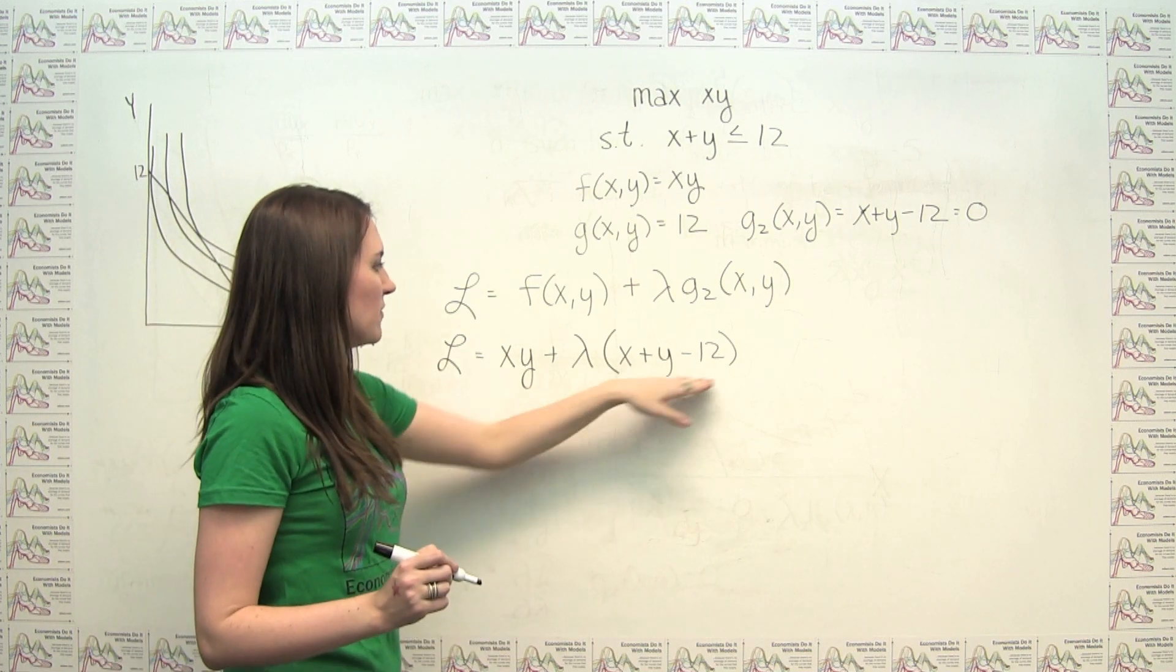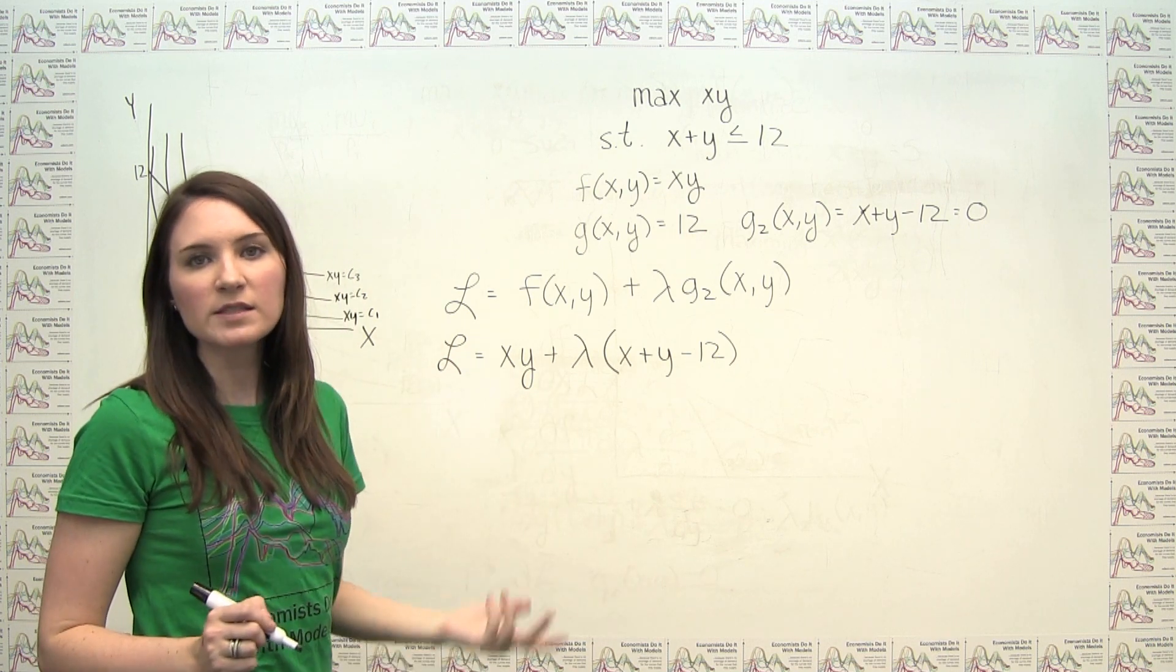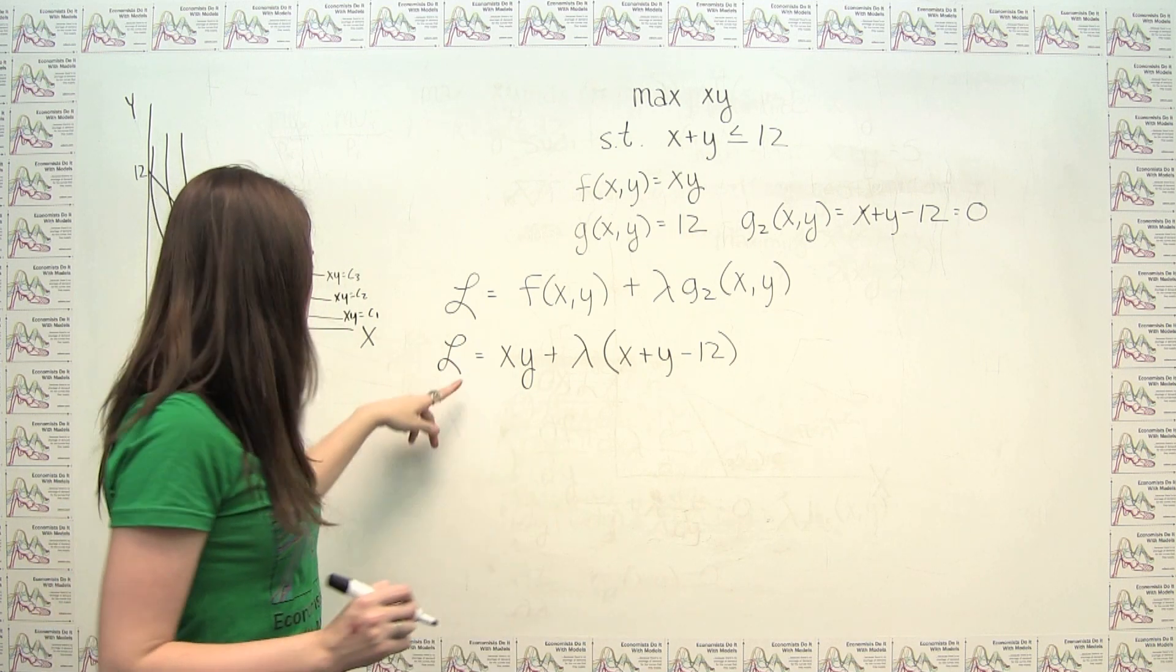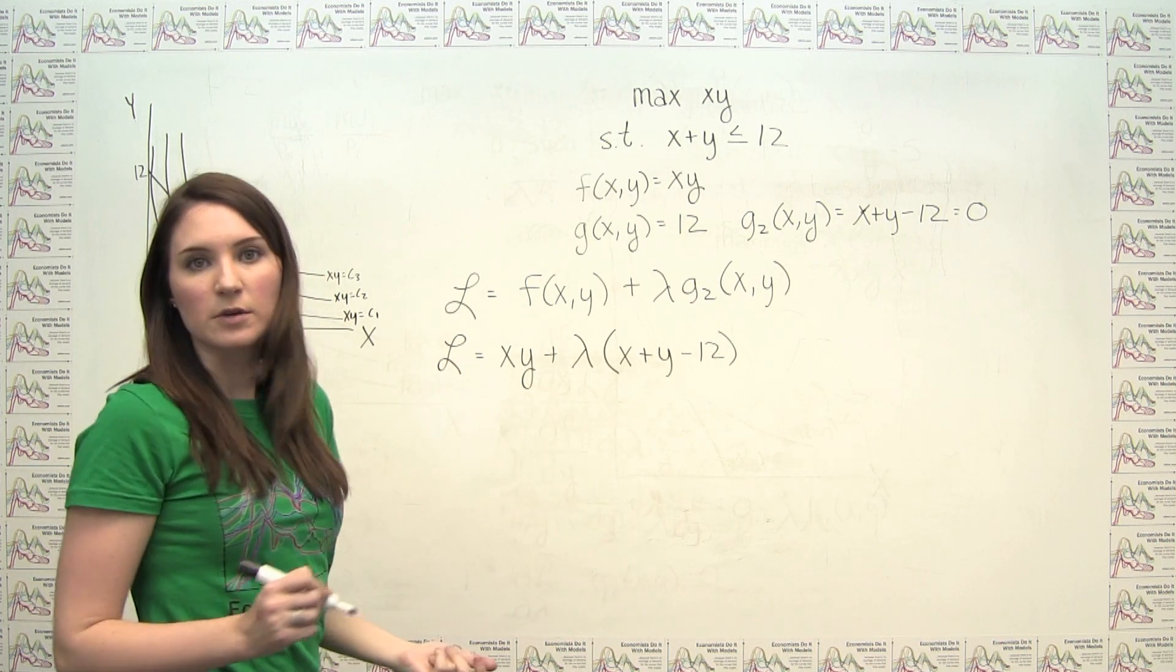In this case, because we have multiple unknowns, three to be exact, we have x, y, and lambda, what has to be true is the partial derivatives of L with respect to each of these variables has to equal zero. So that gives us three equations.